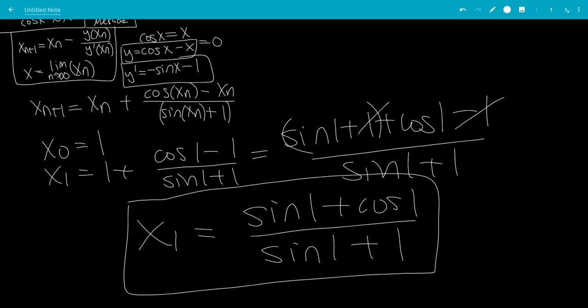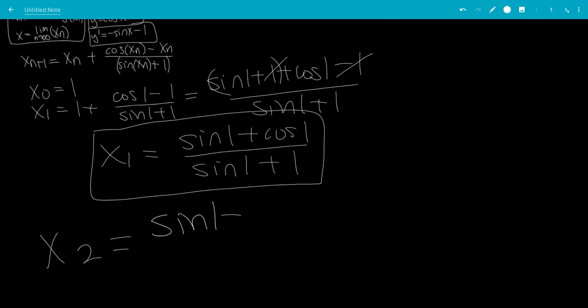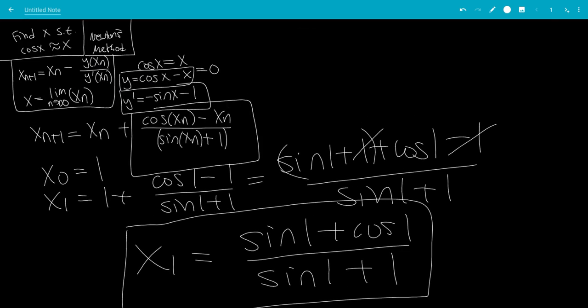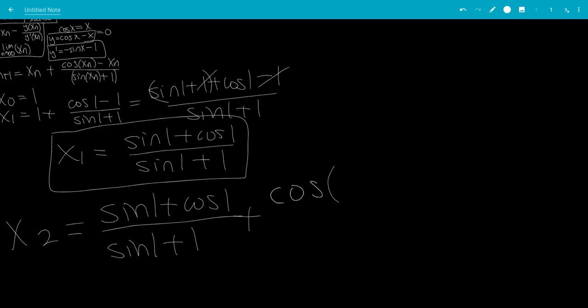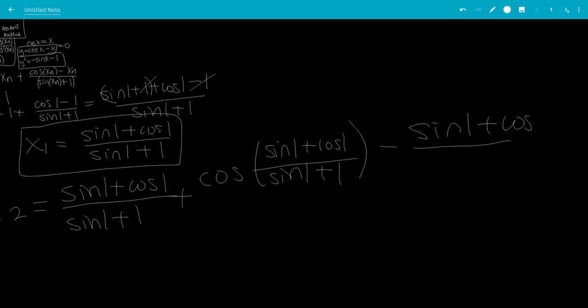So those angles are in radians, by the way. So if you want to plug this in, x2 will be sine 1 plus cosine 1 over sine 1 plus 1. And now we plug this into the following formula above here. So this will be cosine of xn, the previous xn. So that would be sine 1 plus cosine 1 over sine 1 plus 1. Let me make more space. So this would be cosine of sine 1 plus cosine 1 over sine 1 plus 1. Now we have minus xn, which is minus sine 1 plus cosine 1 all over sine 1 plus 1.